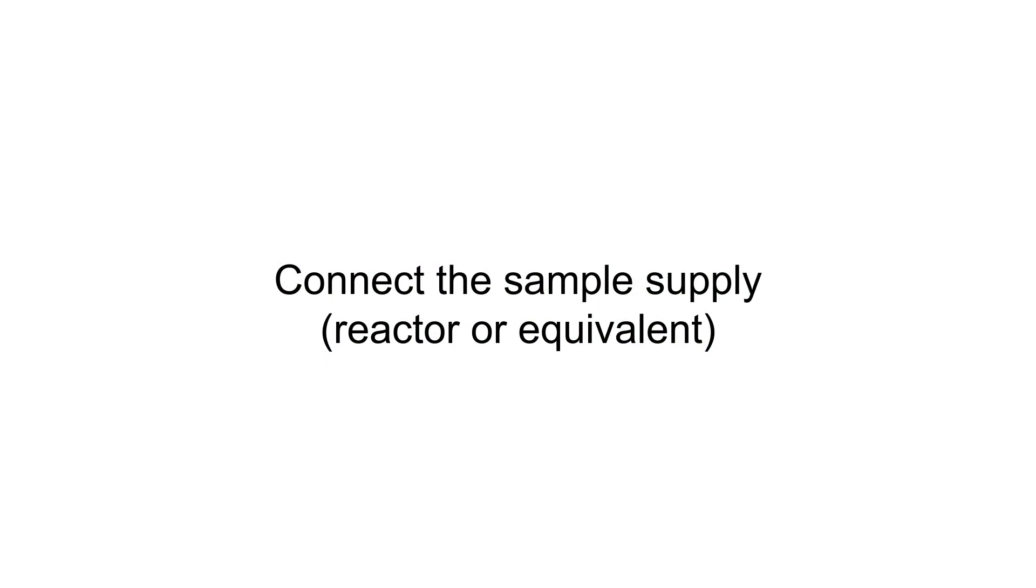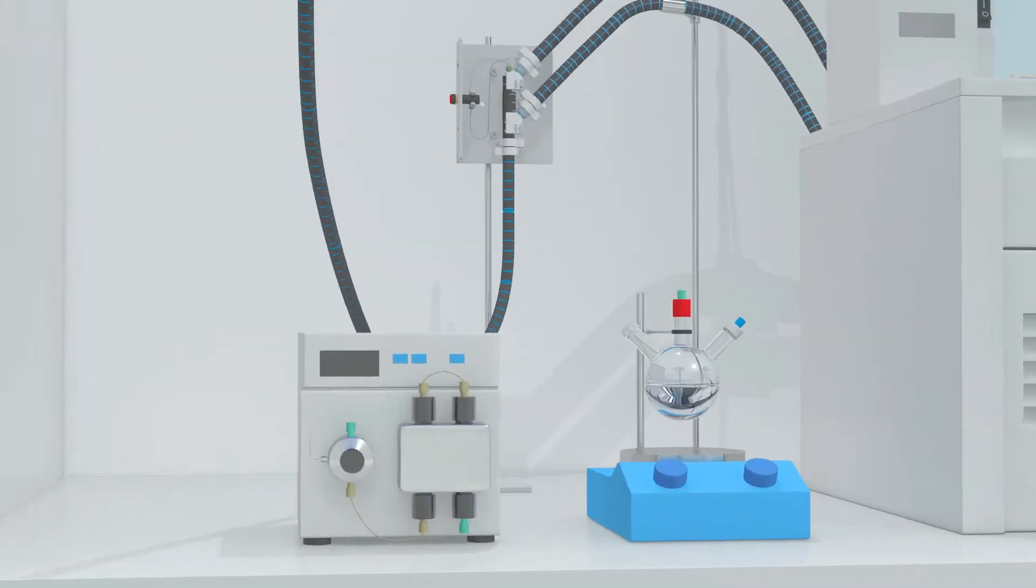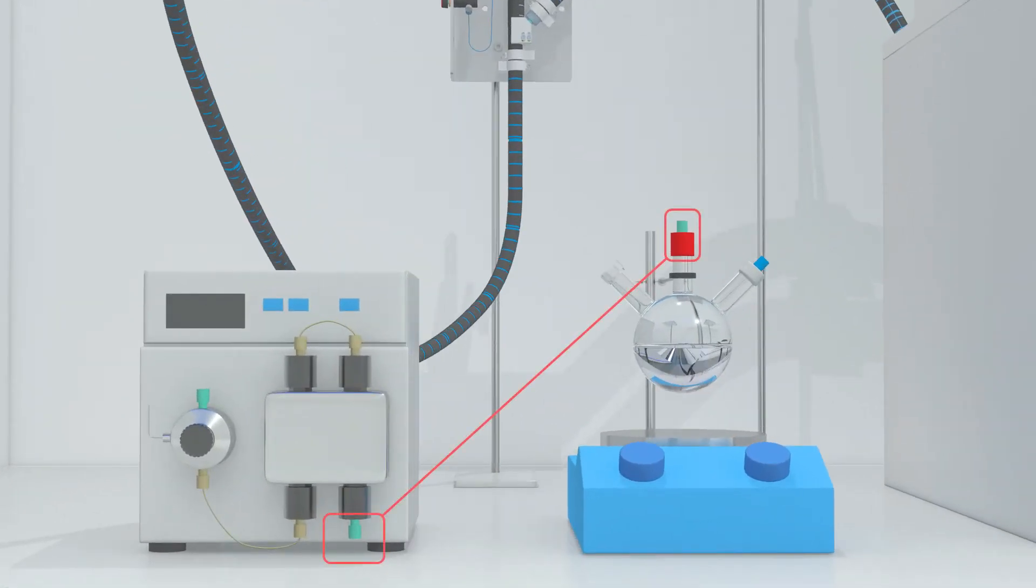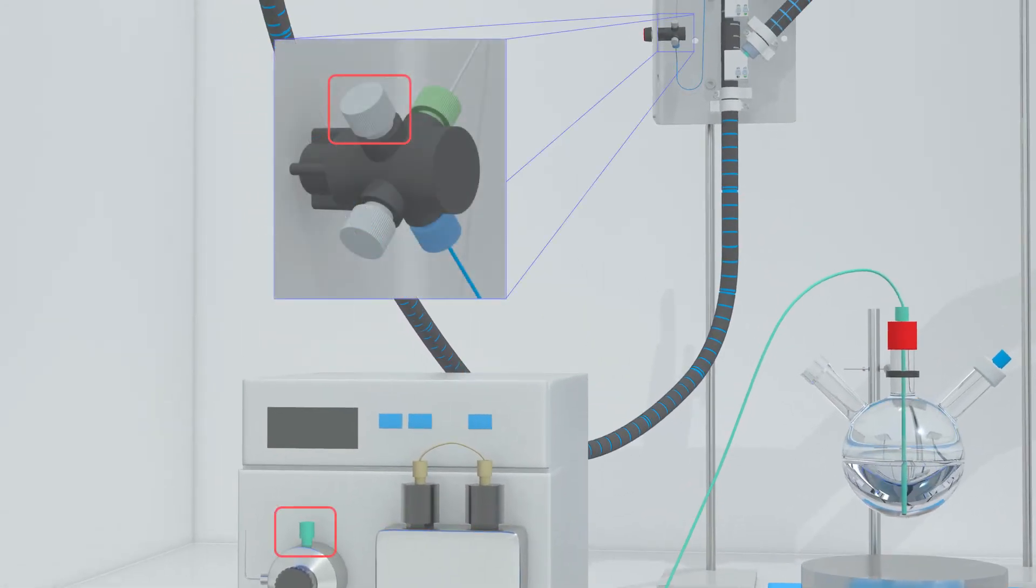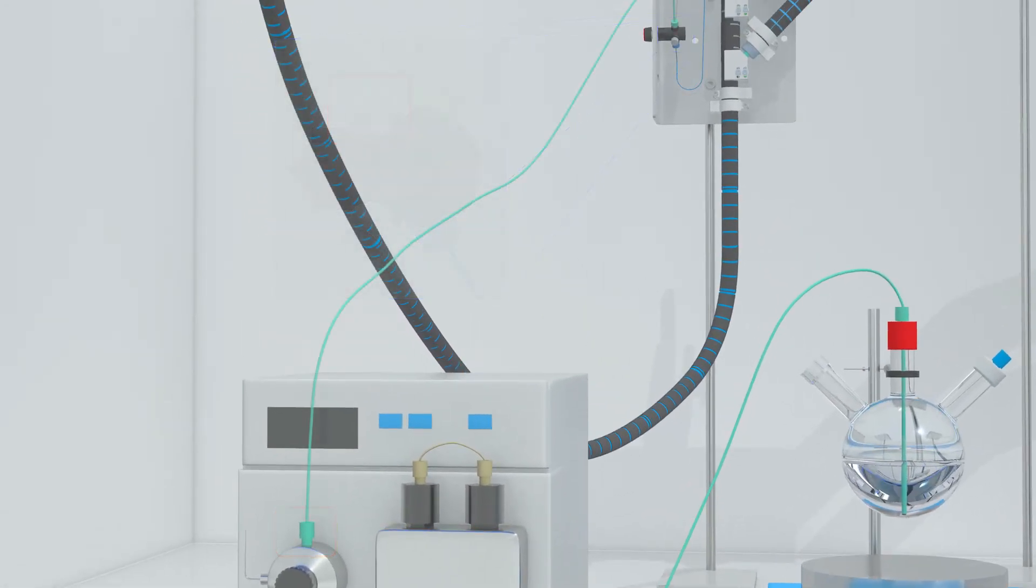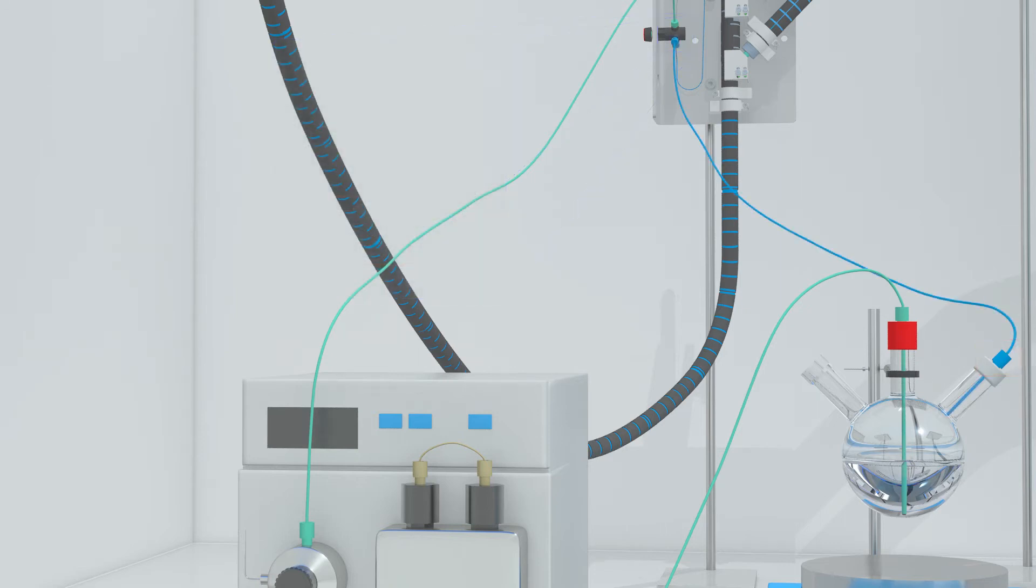Now we start to connect the various system components. Connect the sample supply to the pump, and the pump to the inlet of the flow interface, both shown here in green. Then connect the outlet from the flow interface valve back to the sample supply or to waste, shown here in blue.